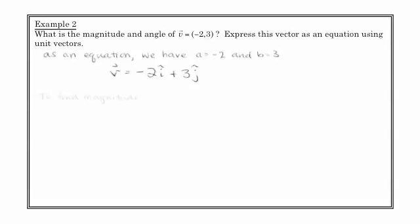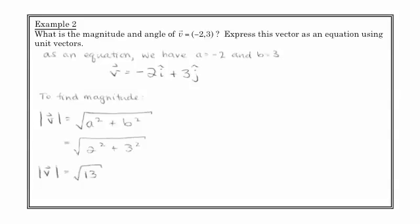And so we want to know the magnitude, well, to find the magnitude, we use our formula, the magnitude of v is equal to the root of a squared plus b squared, which is equal to the root of 2 squared plus 3 squared, which if we add it up, is root 13. So that's the magnitude of the vector v.